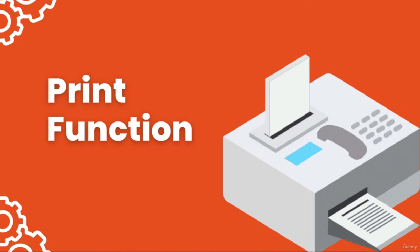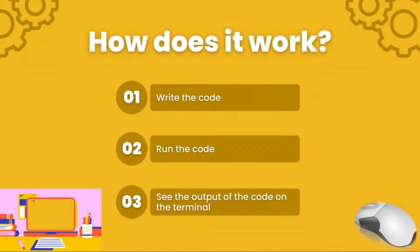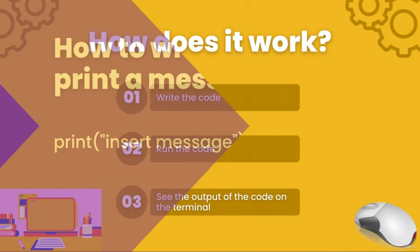Welcome to your first unit of programming. We're going to learn how to use the print function. Don't worry — this is one of the easiest things you can learn in programming. The way programming works is that you write a bunch of code, and then you run that code, and the output, if there is any, will be displayed onto the terminal. When you want to print any text or message — in other words, when you want any text outputted onto the terminal — this is the format you will always follow: print, open brackets,